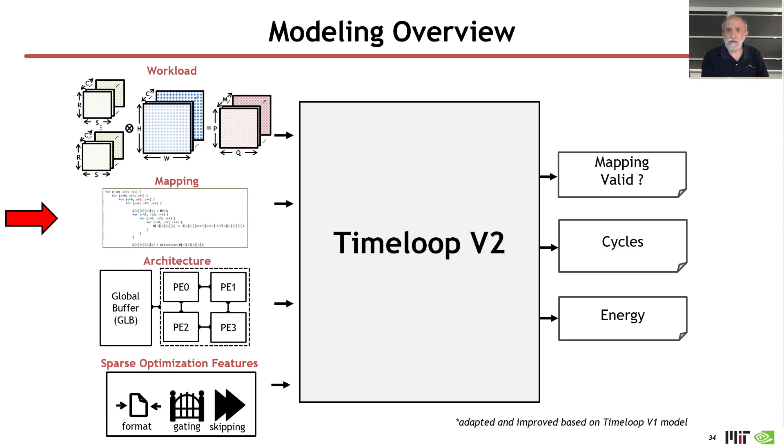However, when we start considering sparse tensors, an additional complication gets introduced. And that is because a sparse tensor can be represented in a variety of ways in memory. That's going to cause a potential complexity in the representation of the mapping problem.